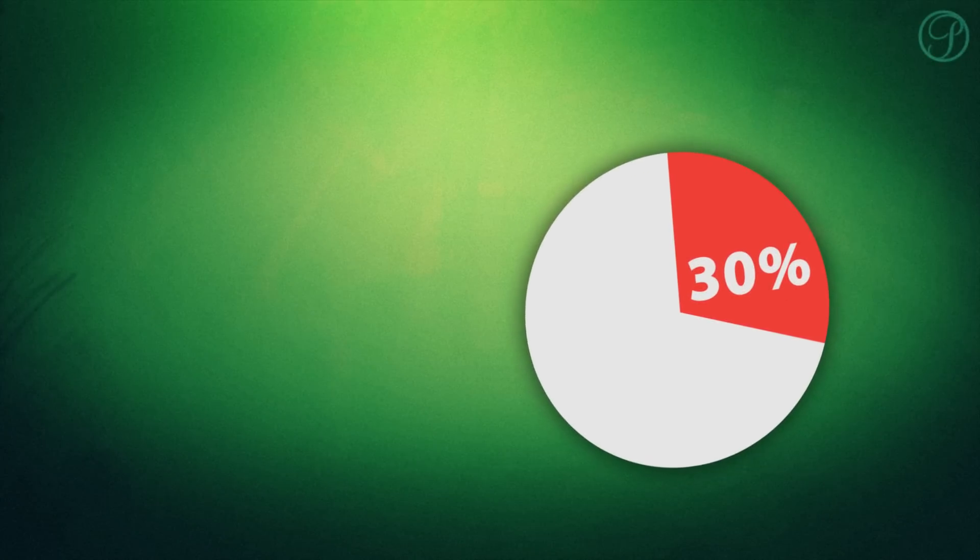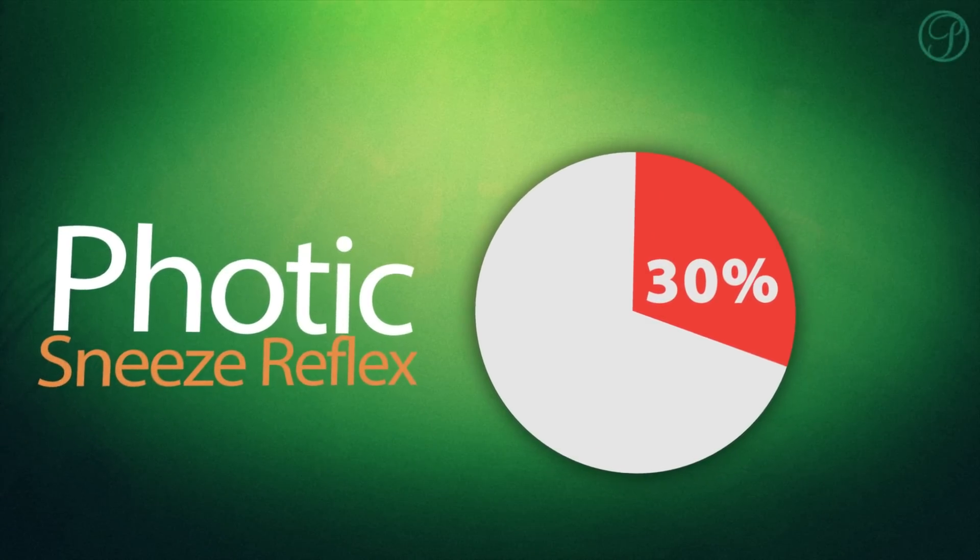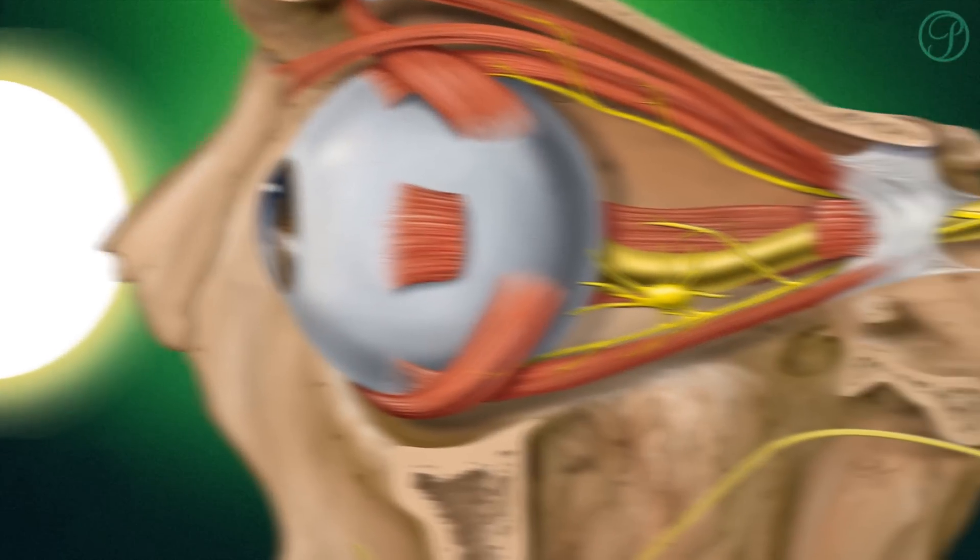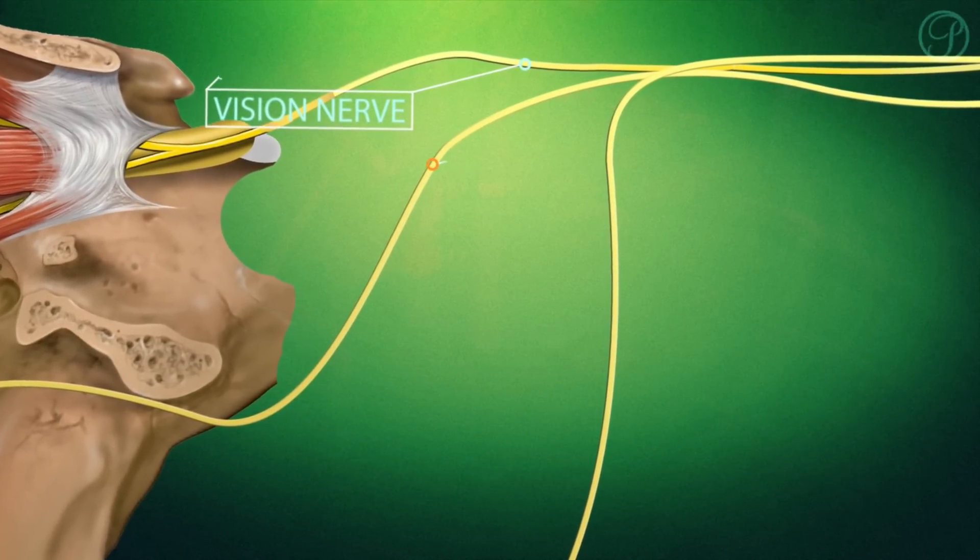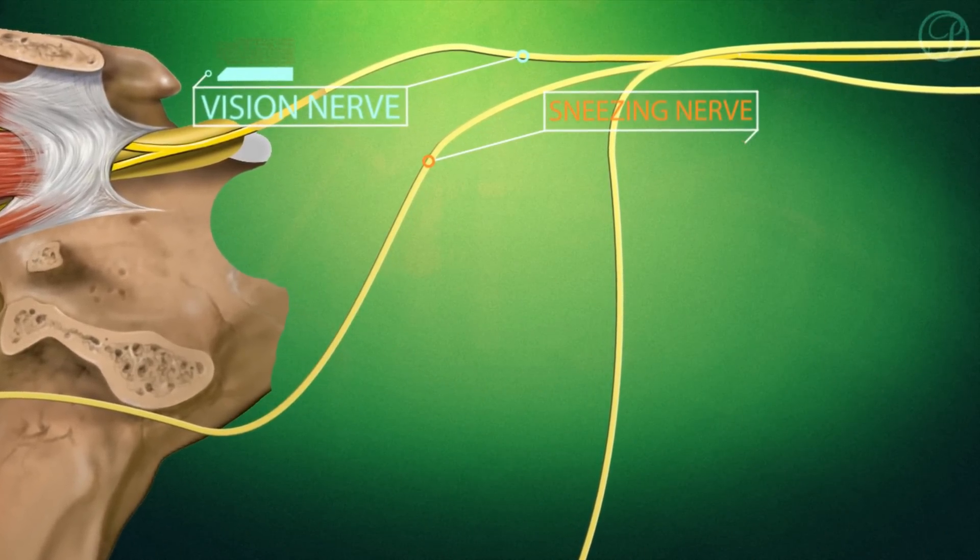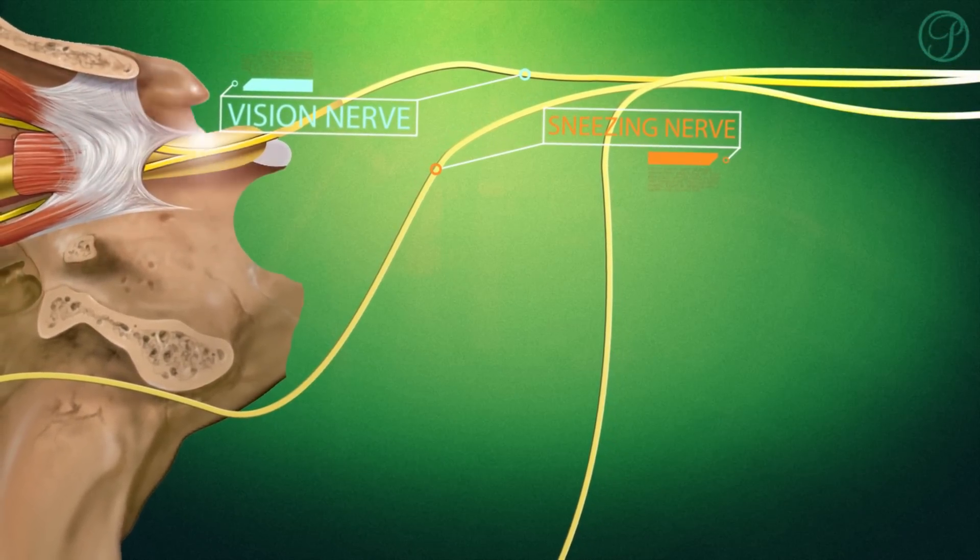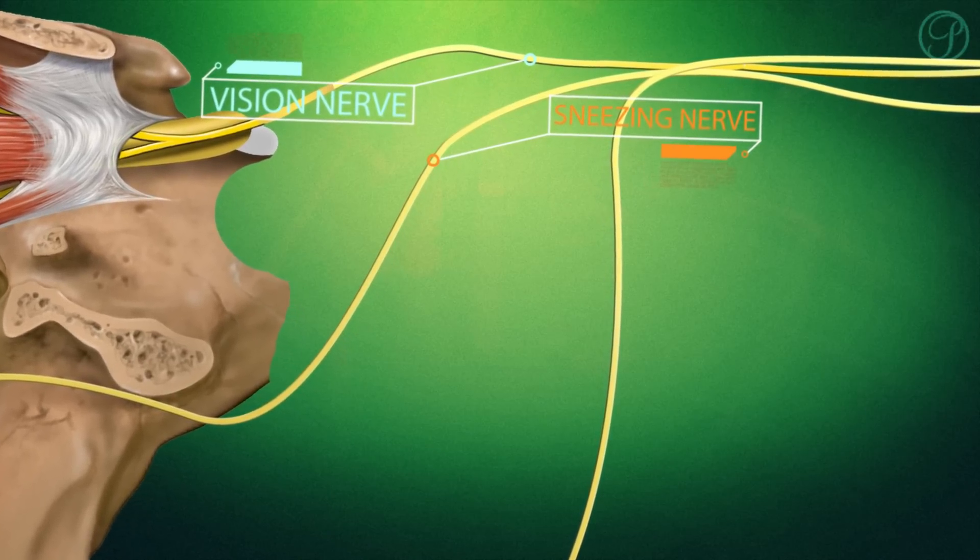While the exact reason for why a third of the population experiences photic sneeze reflex is still not well understood, the most widely accepted theory is that the optic nerve that senses light is located right next to the trigeminal nerve that controls sneezing. While the optic nerve sends electrical impulses to the brain, the signal triggers the trigeminal nerve, confusing the brain into thinking the nose is irritated and a sneeze is necessary.